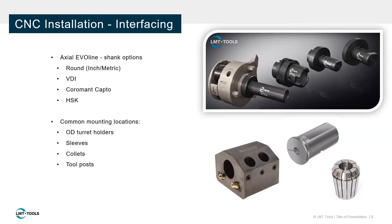Axial EvoLine rolling heads are mounted to an exchangeable shank. The most common interface is a round shank. Typically, round shanks are mounted in OD turret blocks, collets, sleeves, or tool posts.